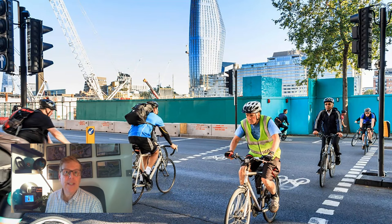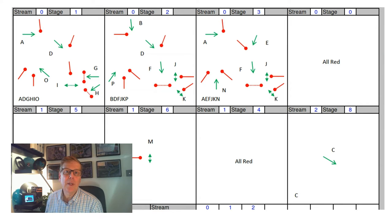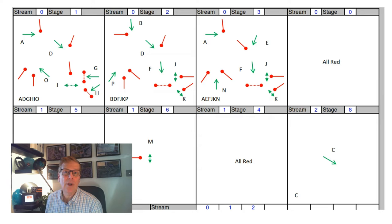The constituent phases in each stage cannot conflict with each other, and the sequence of stages should follow the requirements for early cut-offs, pedestrian and side-road phases to follow a logical pattern. Stages are normally serviced in cyclic order, although the exact sequence will be dependent on the method of control and on the demands currently present. Some phases or stages may be demand-dependent in certain methods of control, which will result in them being skipped if a demand is not present.